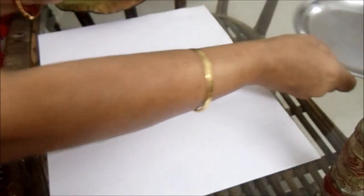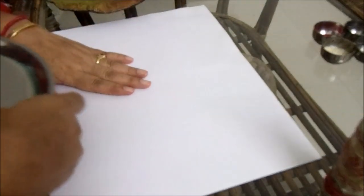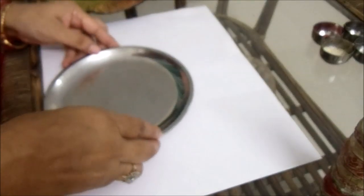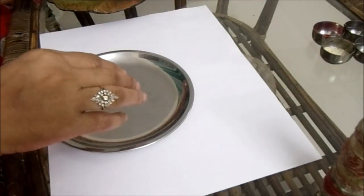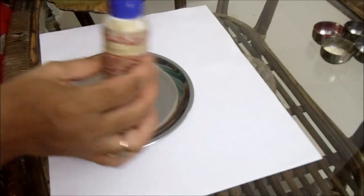For this we need a flat plate like this, a paper but you will make on floor, and some Kum Kum, white glue, and some water.